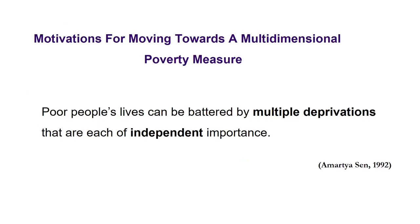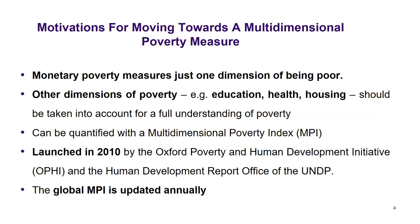So why do we go for a multidimensional poverty measure? If we go by Sen 1992, poor people's lives can be battered by multiple deprivations that are each of independent importance. So we should not focus only on income. There are other dimensions which are very important. Monetary poverty measures look at only one dimension of being poor — income.